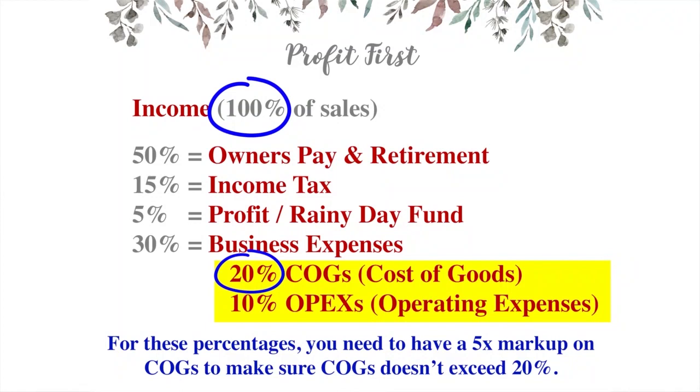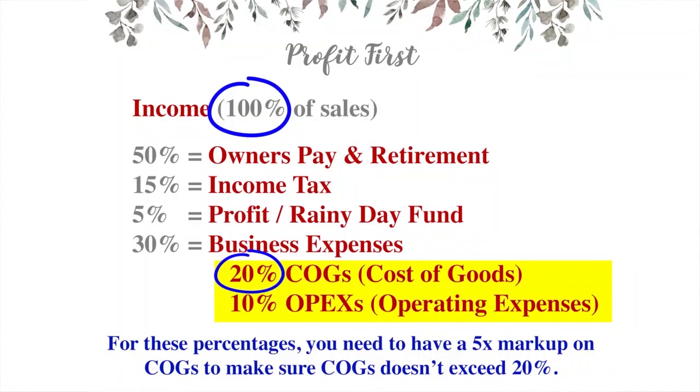Let's say your cost of goods is twenty dollars. With a five-time markup: twenty, forty, sixty, eighty, one hundred — you need to charge your client one hundred dollars. That's what sits in your bank account. Twenty percent of one hundred is twenty dollars, which is exactly your cost of goods. That's how you guarantee each category has the appropriate amount of money.